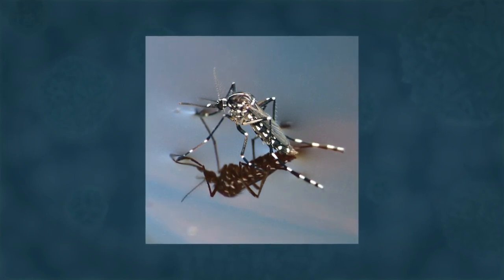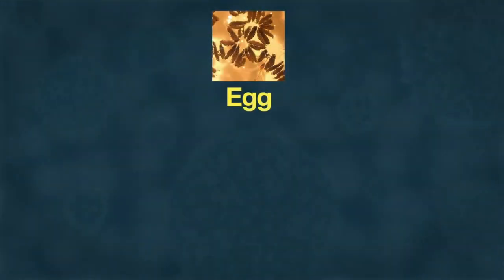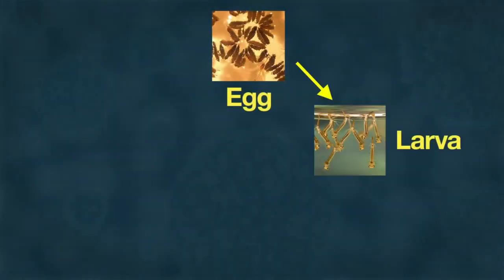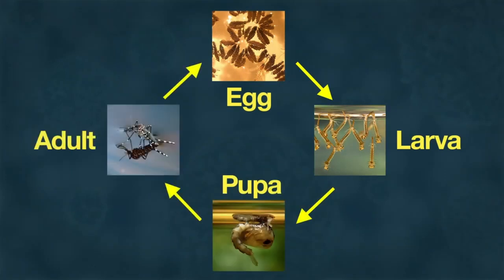The life cycle of a mosquito, like that of many other insects, has four stages—egg, larva, pupa, and adult.